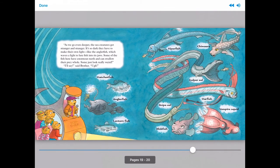As we go even deeper, the sea creatures get stranger and stranger. It's so dark, they have to make their own light. Like the angler fish, which waves a light to lure fish into its jaws. Some of the fish here have enormous teeth and can swallow their prey whole. Some just look really weird. I'll say, said Brother.